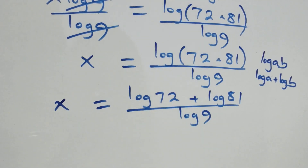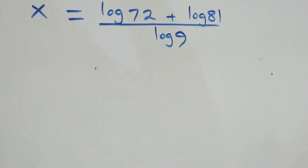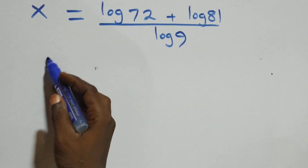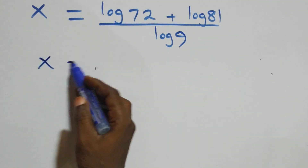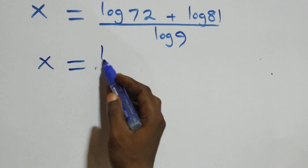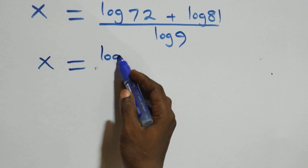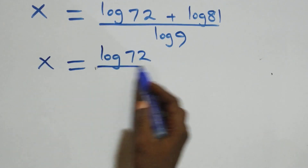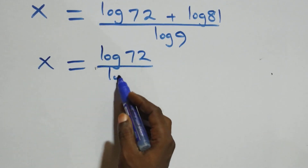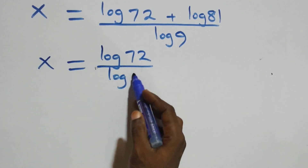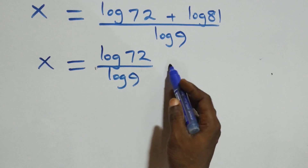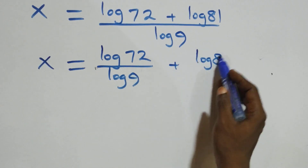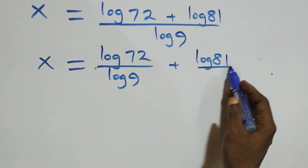We separate this into two fractions: x equals log 72 over log 9, plus log 81 over log 9.